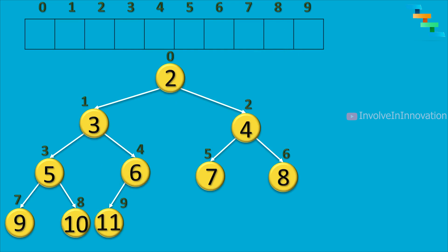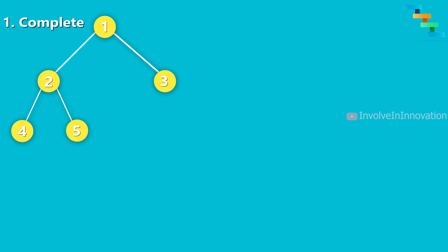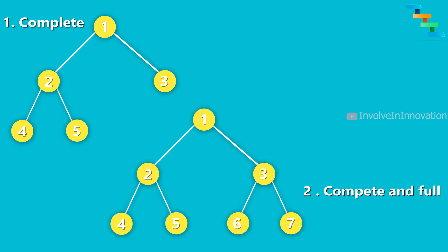Now we will see some binary trees and determine whether each is full or complete or incomplete. The first tree is complete because in all levels the nodes are filled from left to right. It is not full because the last level is not completely filled — it still has two vacant nodes. The second tree is complete because all levels have nodes filled from left to right, and it is also full because all the levels are completely filled. So this tree is complete and full.